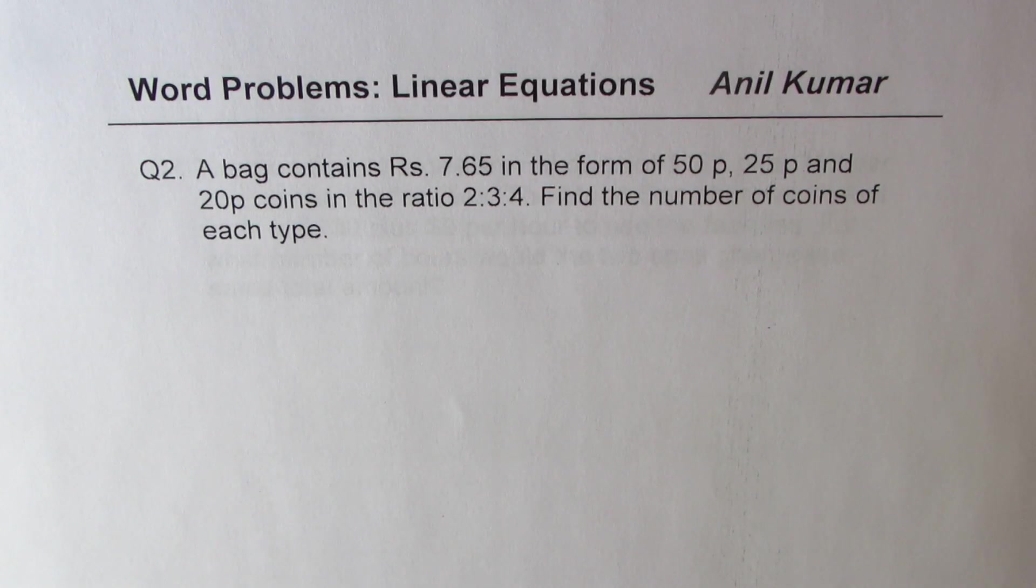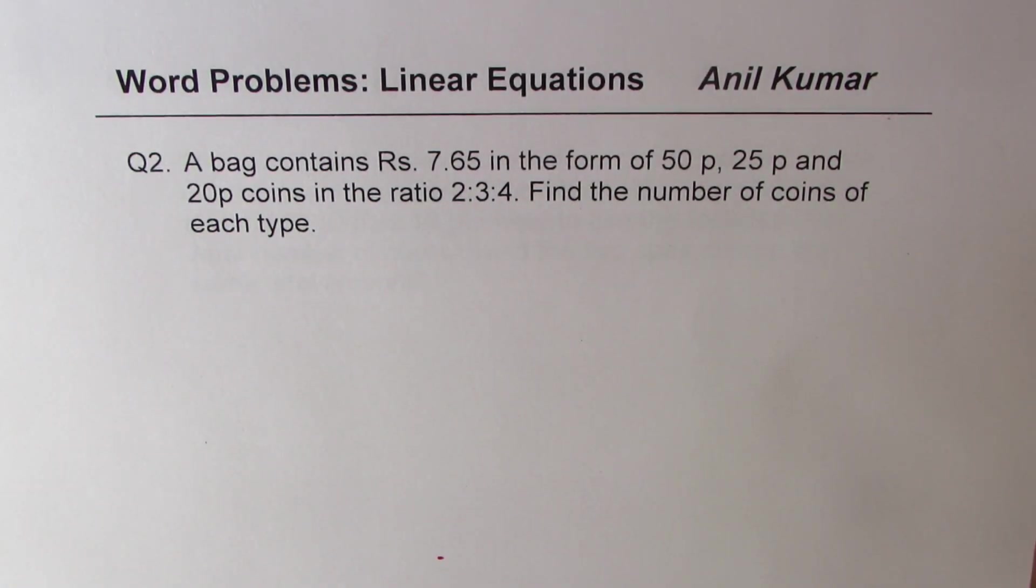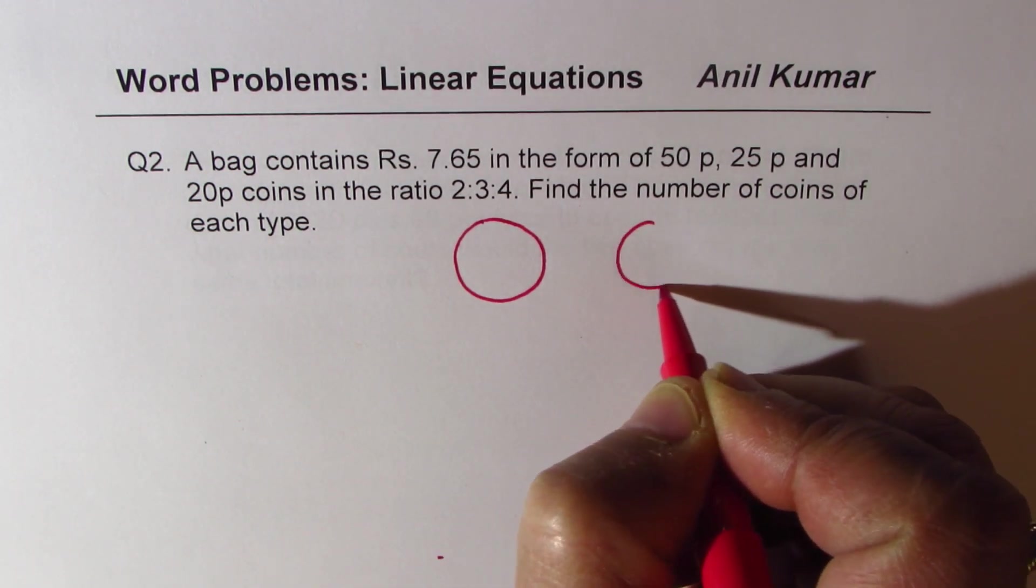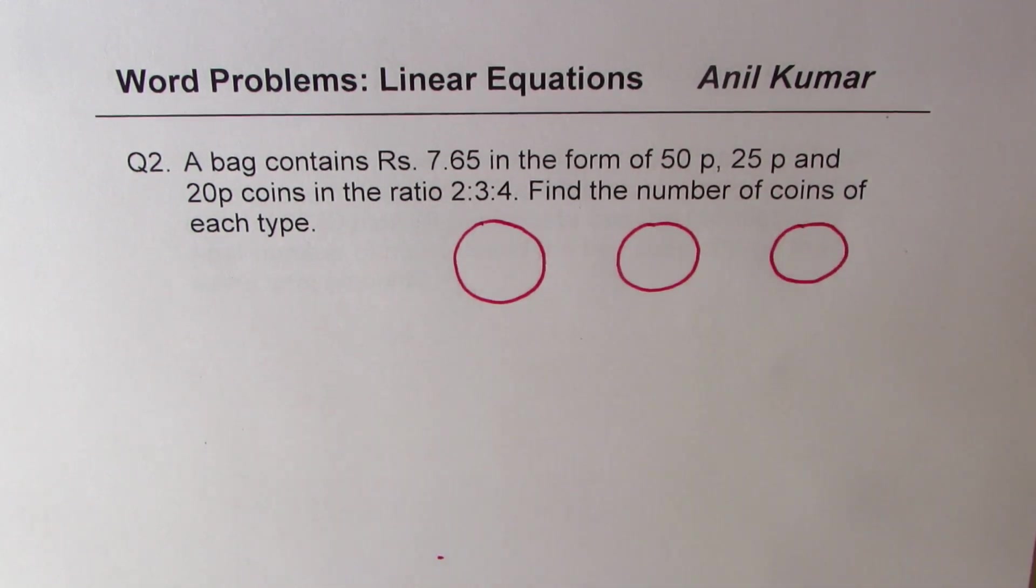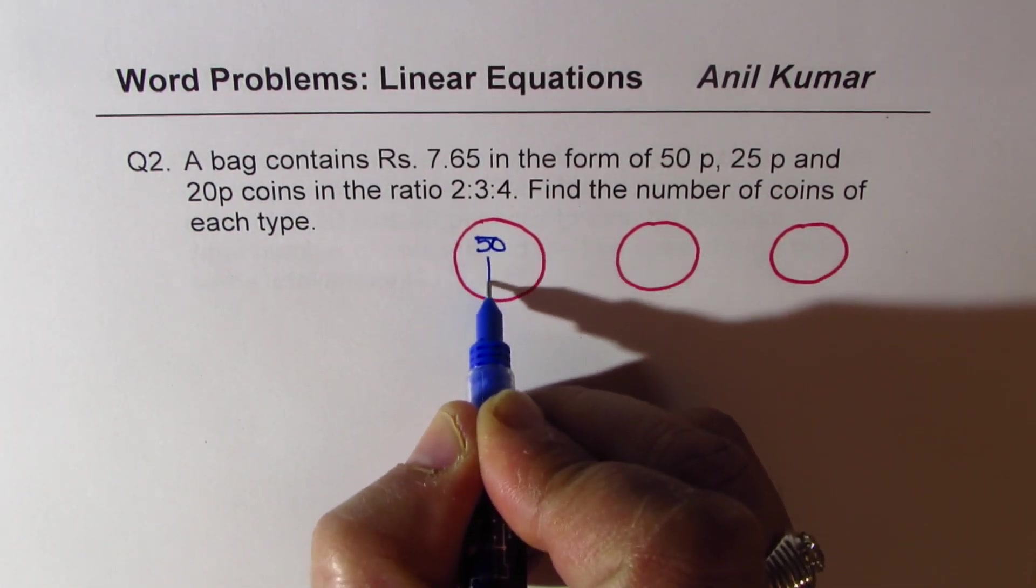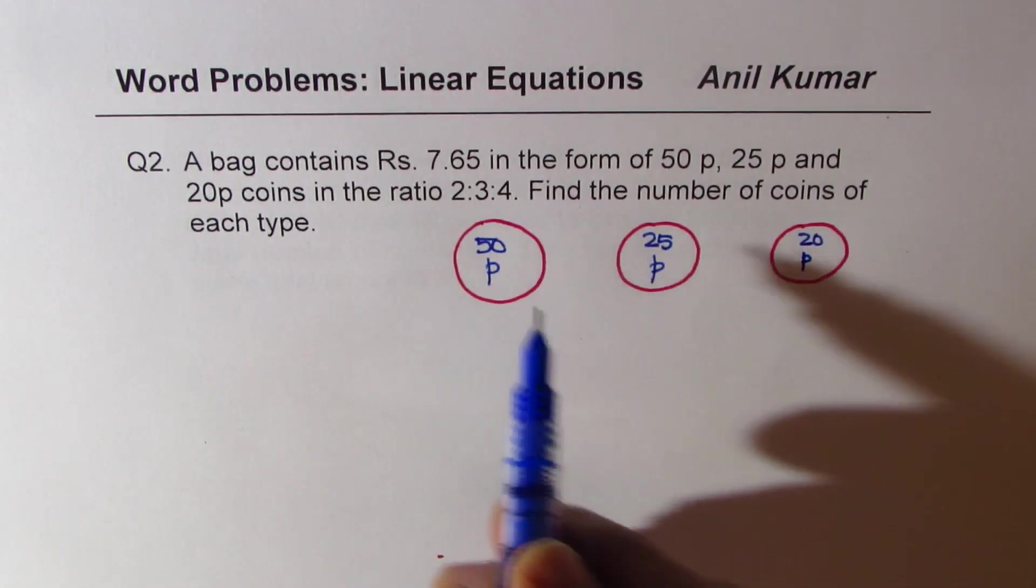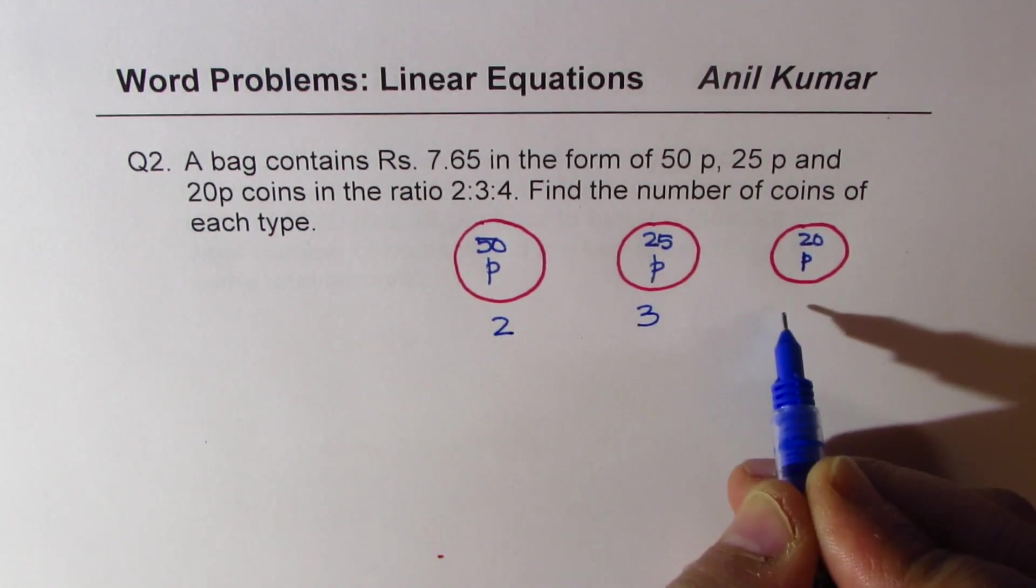Now here is question number 2. A bag contains rupees 7.65 in the form of 50 paisa, 25 paisa, and 20 paisa coins in the ratio of 2:3:4. Find the number of coins of each type. Now this question is very interesting. Let us think that we have these as our coins. This is our 50 paisa, that's 25 paisa, and this is 20 paisa coins. So that is the value of each coin.